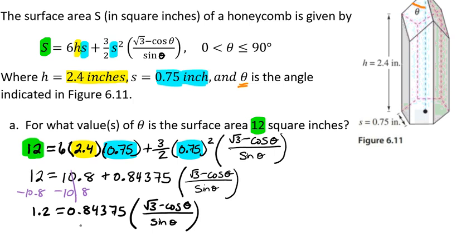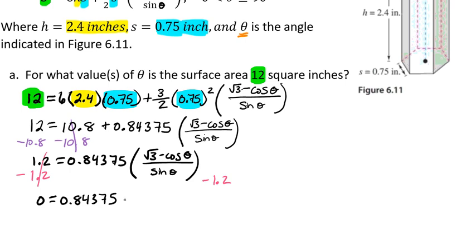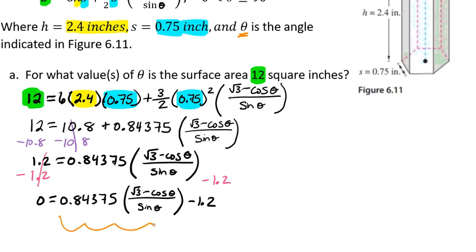Because of this fraction, this doesn't seem like it's going to be something that's easy to solve, so our calculator is probably going to be our best bet. We're going to move the 1.2 over to the other side so we can plug this into our calculator. So we're going to have 0.84375 times the square root of 3 minus the cosine of theta divided by the sine of theta minus 1.2, and this is what we're going to plug into our calculator.